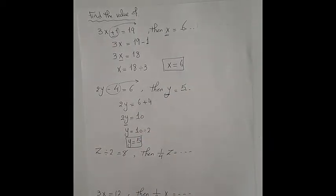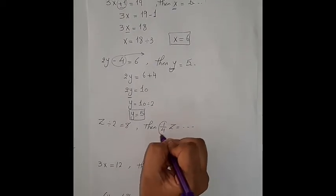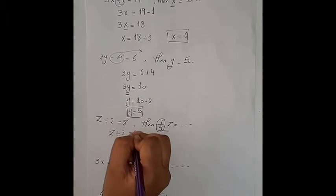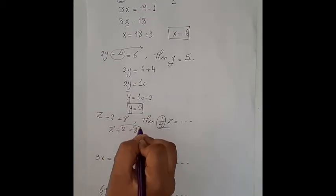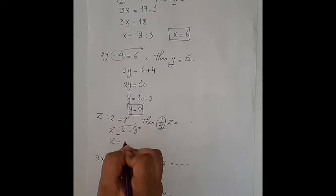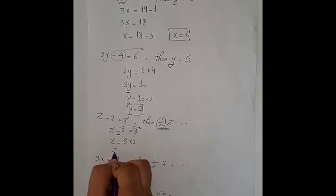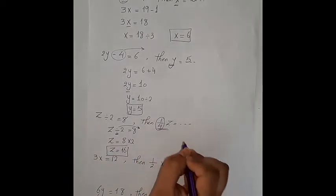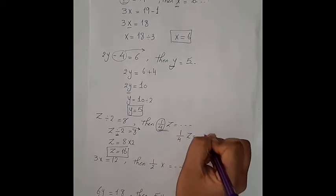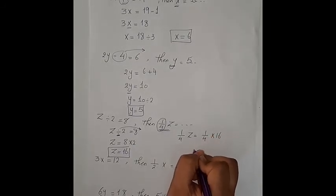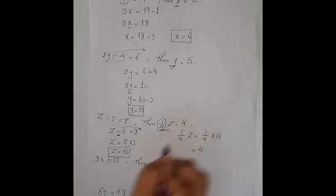Next: z divided by 2 equals 8, but we need the value of ¼z. To get ¼z we first need to find z. So z divided by 2 equals 8; the inverse operation of divide is multiply, so z equals 8 times 2, giving z equals 16. Now ¼z means ¼ multiplied by the value of z, which is 16. ¼ multiplied by 16 equals 4, so ¼z equals 4.